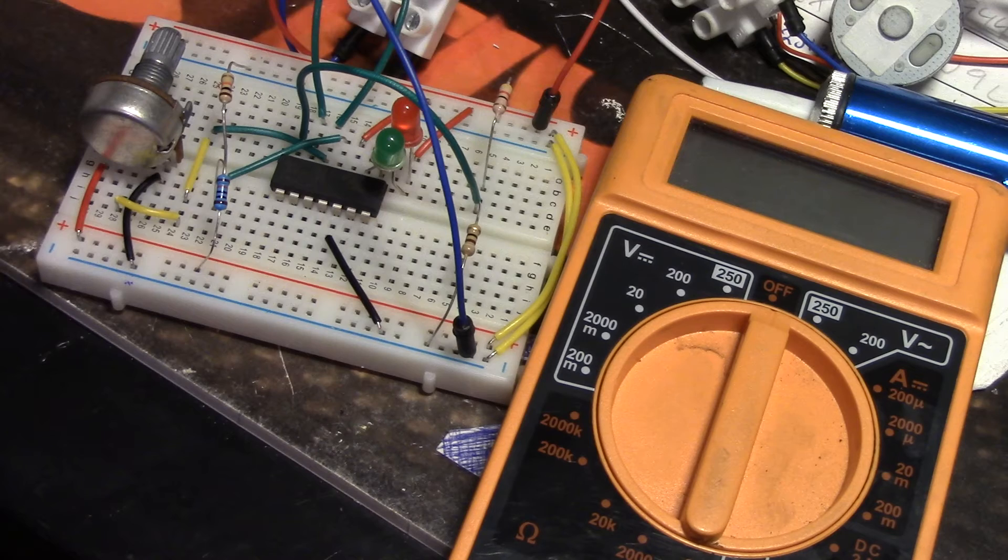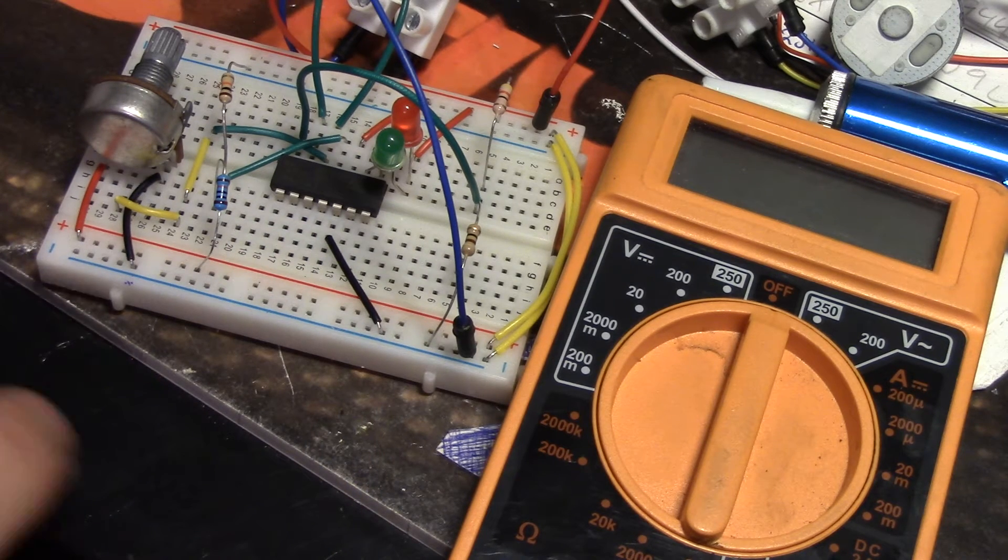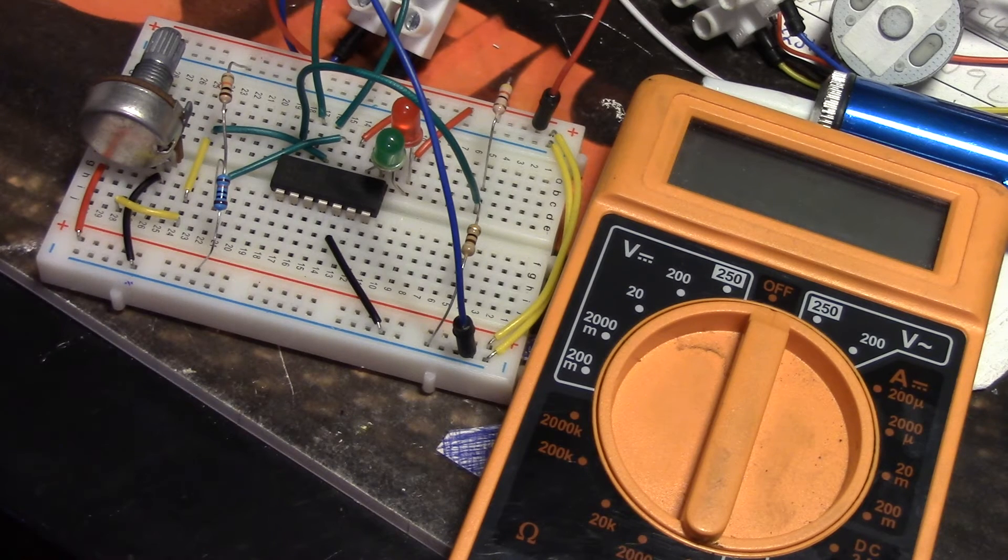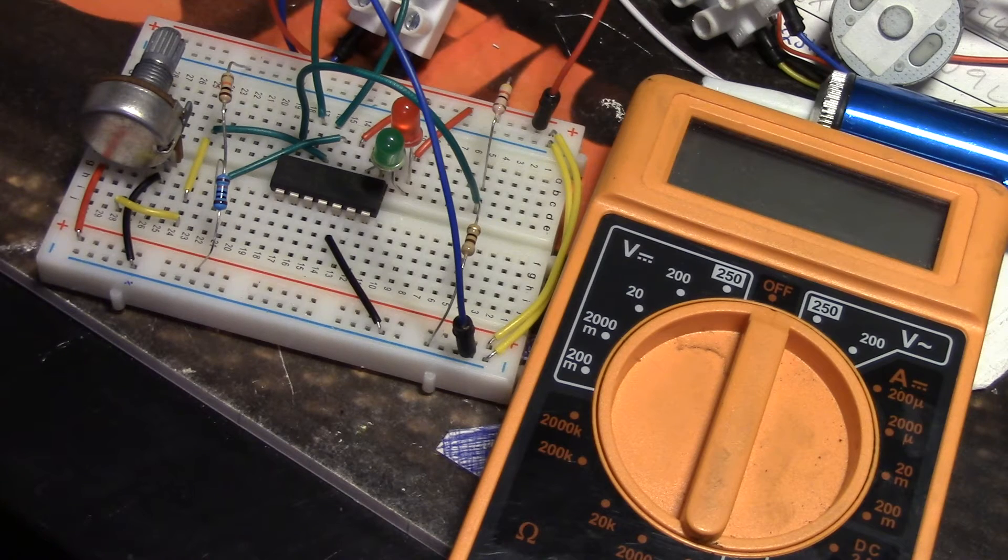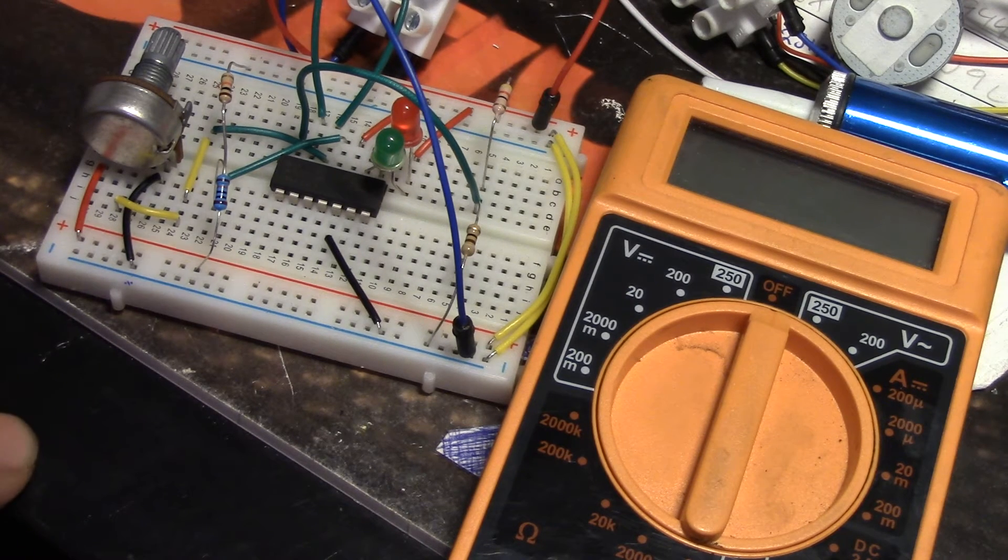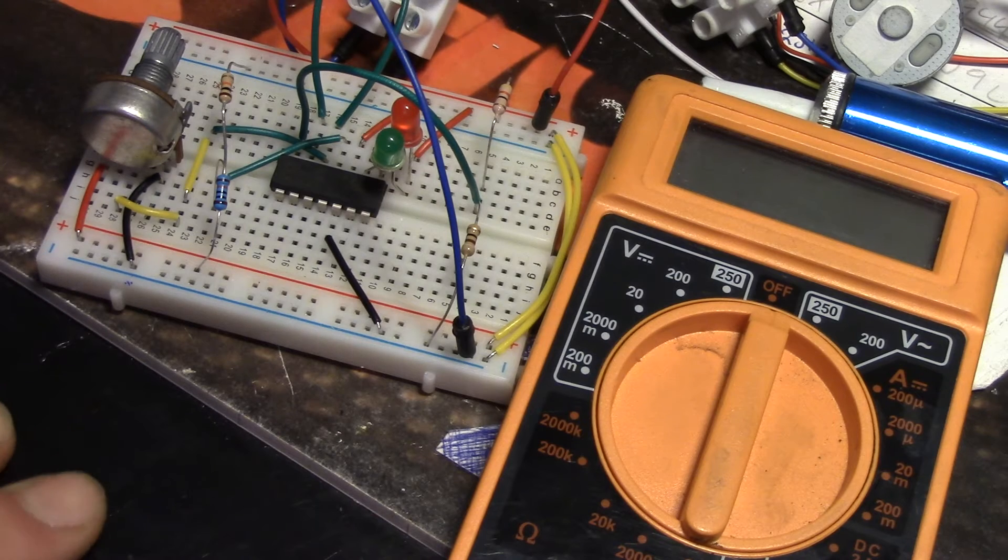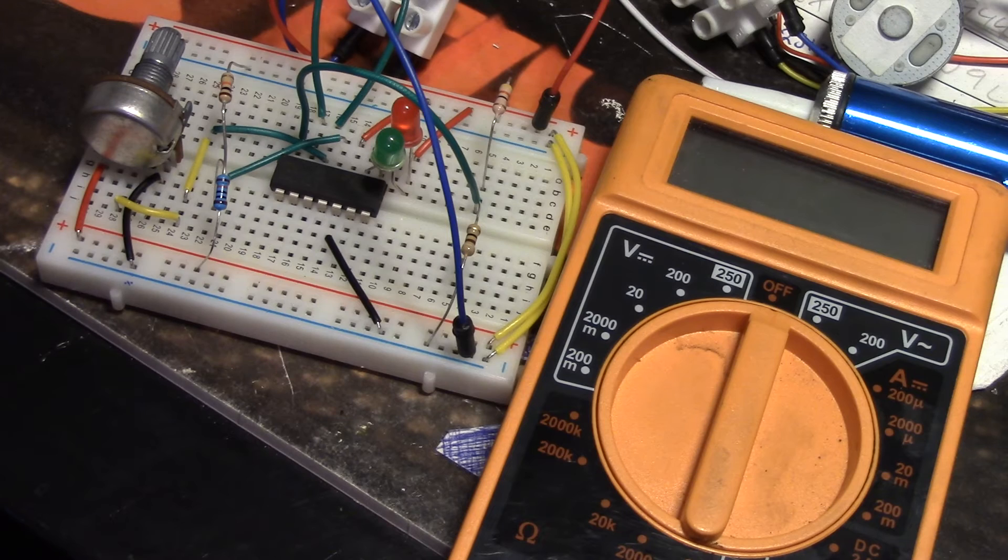What it does is it compares two different voltages. So it has two inputs and one output, and it compares the voltages. If the input on the plus is greater than the input on the minus, the output is set high.